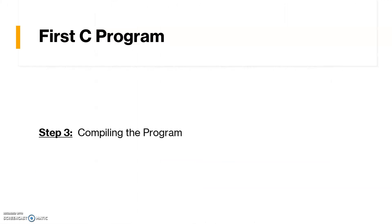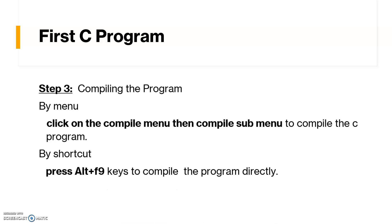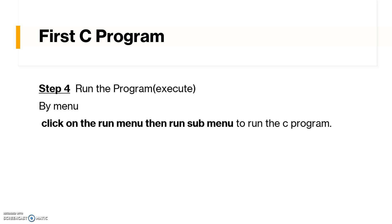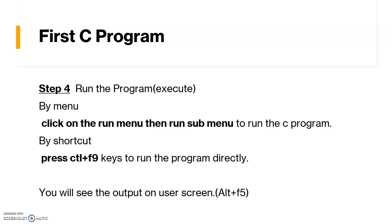Once saved, we go to the next step: the compilation process. Compilation converts our program into a machine-understandable format. You can click on the Compile menu and select the Compile sub-menu, or use the shortcut Alt+F9. To execute the program, go to the Run menu and select Run, or use Ctrl+F9. The four steps are: writing, saving, compiling, and executing the program.